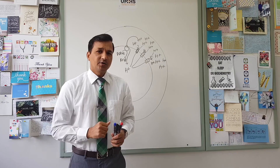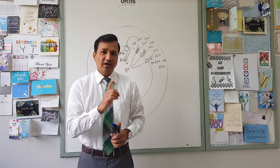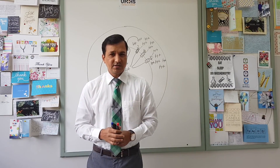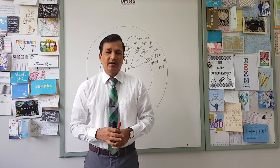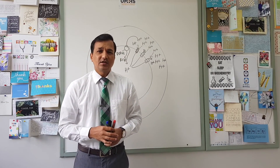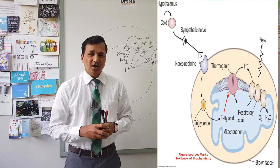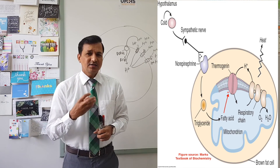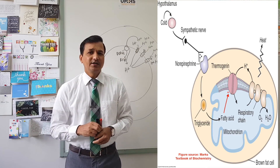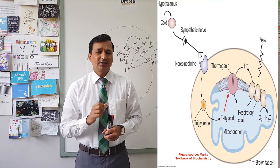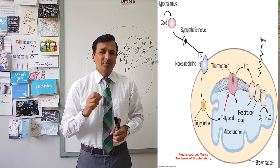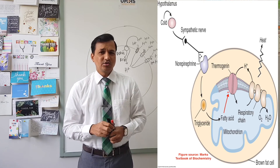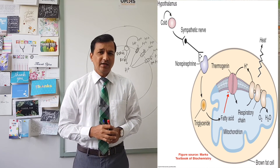Today I am going to talk about something else called non-shivering thermogenesis. On exposure to cold, there is a stimulation of the sympathetic nervous system in our body, which will release norepinephrine. This norepinephrine will go and bind to beta-3 adrenergic receptors present on brown adipose tissue and other tissues in our body.